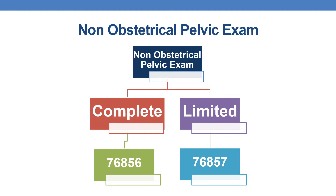Now coming to non-obstetrical pelvic examination. Non-obstetrical pelvic examination is of two types: complete and limited. The specific code for complete pelvic examination, non-obstetrical, is 76856, and the code for limited pelvic exam is 76857.